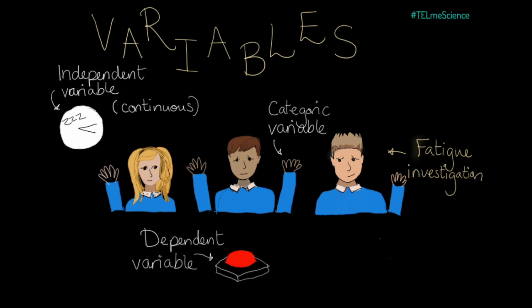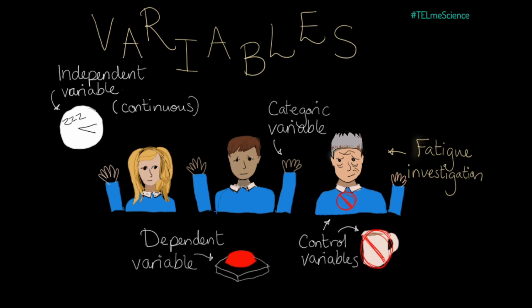The control variables are everything that needs to be kept the same. In our hypothetical experiment, we're talking about things like whether they've recently drunk a stimulant like coffee or not, the age of the participant, that sort of thing. You can't compare the reaction time of a well-rested teenager with an exhausted pensioner — you won't be able to tell whether the results were down to fatigue or age. The more you keep control variables the same, the more precise your results will be. If you could keep all the variables the same, and if only the independent variable influenced the dependent variable, you would have a fair test and an exhausted pensioner.